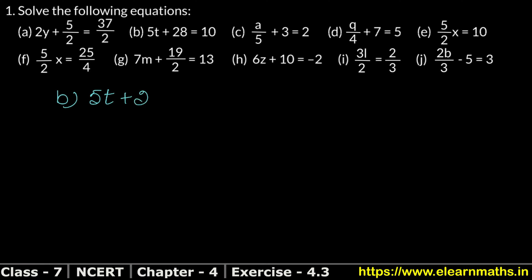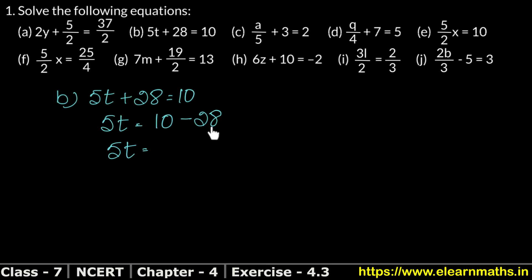Part b: 5t + 28 = 10. The variable term is 5t and the constant term is 28. We move 28 to the right hand side, where plus becomes minus. So 5t = 10 − 28 = −18. Now 5 is multiplied with t, so moving it to the other side gives division: t = −18/5. That is the answer.